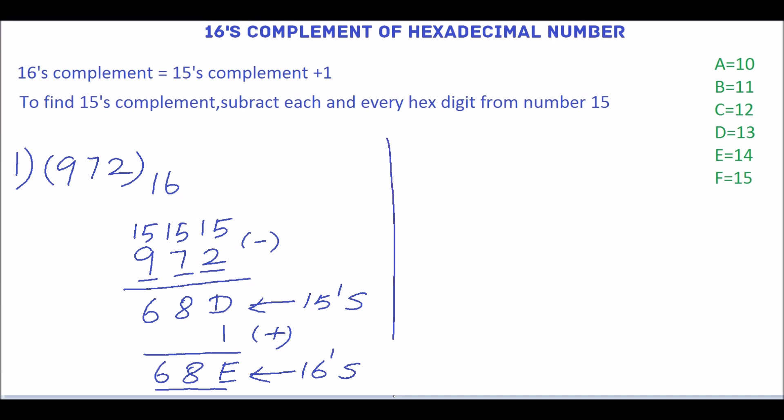We will see one more example. The hexadecimal number 854. Write 8, 5, 4.